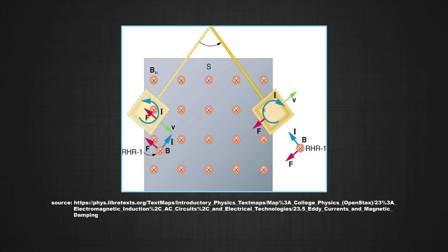Let me explain the damping. As the sheet enters the field from the left, the flux linked with the sheet increases and the eddy currents are developed in the anti-clockwise direction. This sheet experiences a force in the left direction which tends to slow it down. Once the copper sheet is inside the field, the flux associated with it is constant. Now as it moves out of the field from the right direction, the flux decreases. Eddy currents are induced in the clockwise direction and the sheet experiences a force in the left direction which again slows it down. Thus eddy currents produce a dampening effect on the motion of the sheet and finally bring it to a stop.